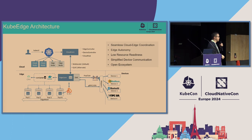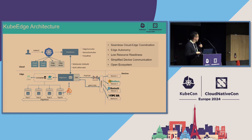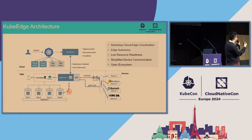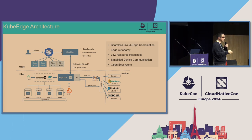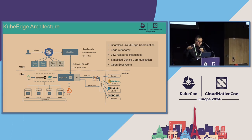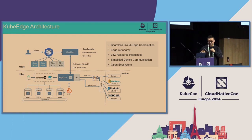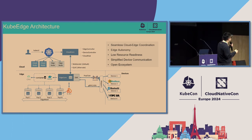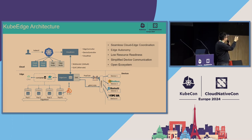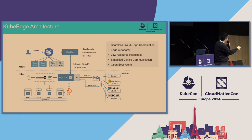This is the KubeEdge architecture. KubeEdge is built on top of Kubernetes and includes three parts: cloud, edge, and devices. In the cloud side, we use the Kubernetes master, so users can use the Kubernetes API to interact with the KubeEdge cluster. You can deploy the control plane in the public cloud or in your own data center.